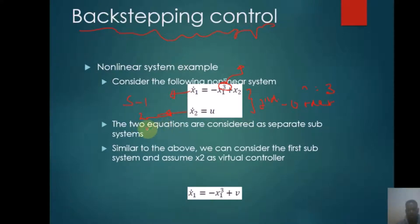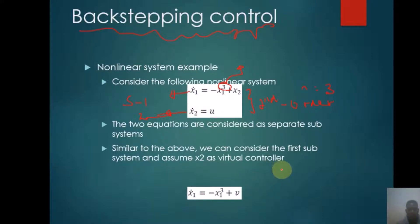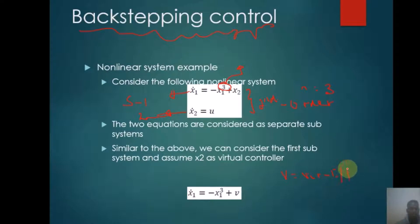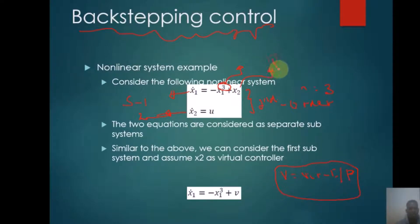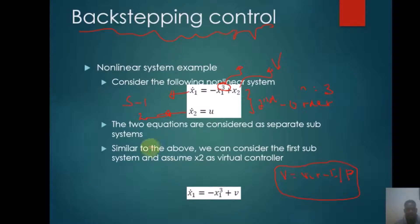There are two separate equations, X1 and X2, which are considered to be subsystems, similar to the above example. The first step is to introduce an unknown equation V, which is a virtual input. V is substituted in the place of X2. So X1_dot, the first derivative, becomes minus X1³ plus V, where V is the virtual input.